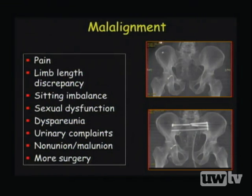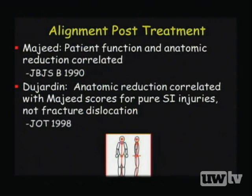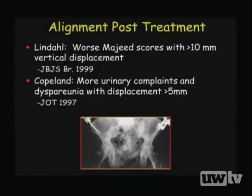Malalignment is a major factor, though some malaligned patients do well and some well-aligned patients have multiple problems. Majeed studied 42 B and C type unstable injuries treated with anterior external fixation and correlated patient function with anatomic reduction. Dijardin studied 88 patients with anterior fixation or plating plus traction and found anatomic reduction correlated with Majeed scores for posterior sacroiliac joint injuries but not fracture dislocations. Lindau found worse Majeed scores with more than 10 mm of vertical displacement in 110 unstable pelvic fractures treated with anterior fixation only.